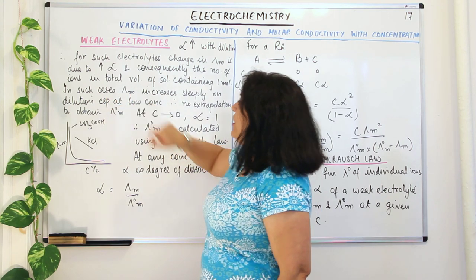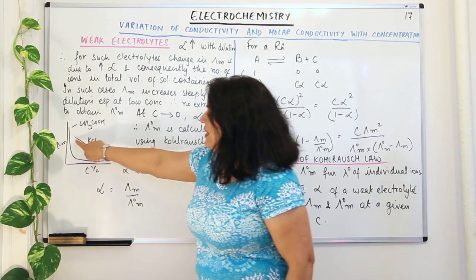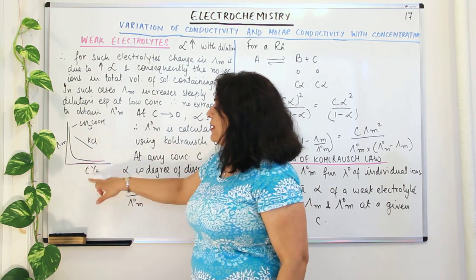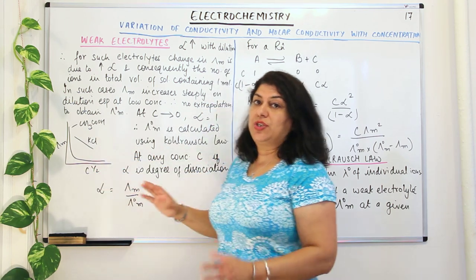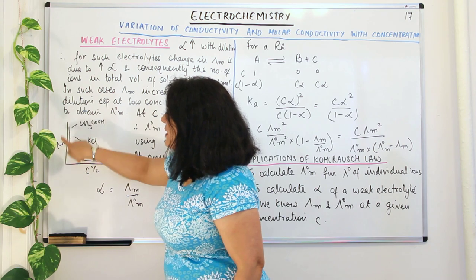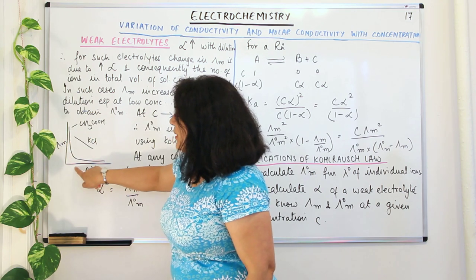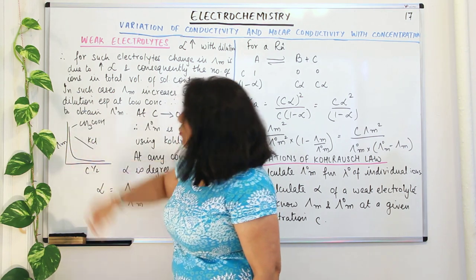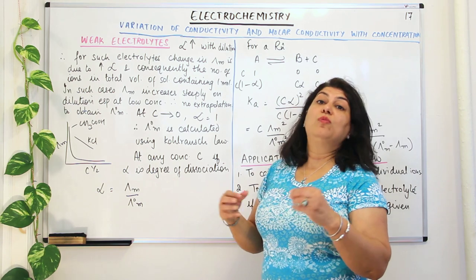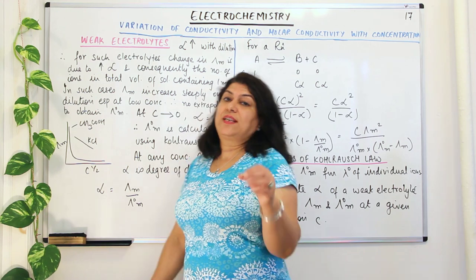Molar conductivity lambda M increases steeply on dilution. For a strong electrolyte like KCl, when we plotted molar conductivity versus concentration, it shows a straight line, and extrapolating it gives the point where it hits lambda°M, where the concentration is approaching zero — we call it lambda°M. But in the case of a weak electrolyte like CH₃COOH, look at this curve: as you decrease the concentration, there is not much change, but at lower concentrations, all of a sudden there is a steep increase in the conductivity.